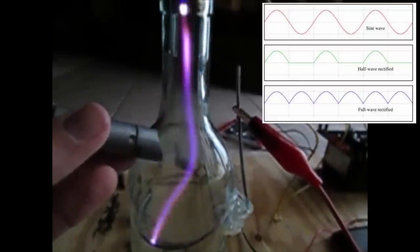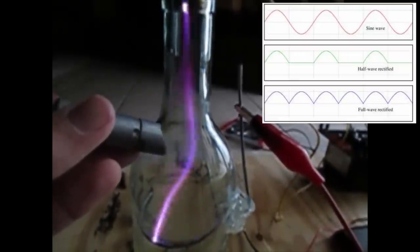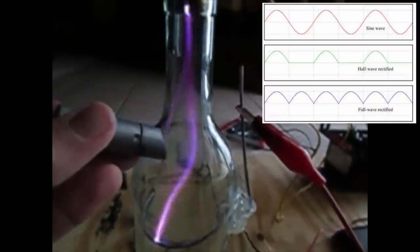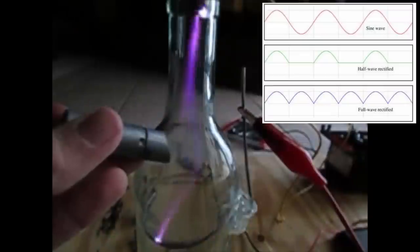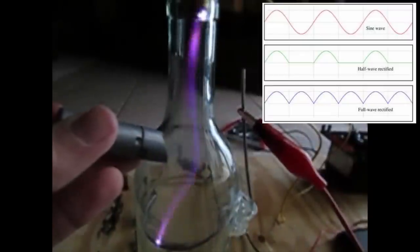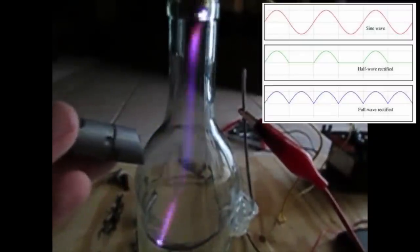So like I was talking about earlier, when I switch the electrodes around, it switches its path around the magnet. This is just switching its direction 60 times per second. Instead of having to switch the electrodes around, it just does it by itself. And since it happens so fast, in real time, it just looks like it's splitting into two beams.